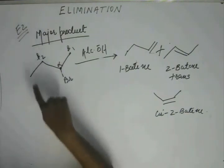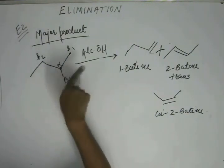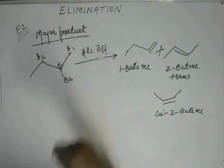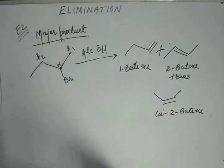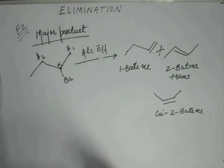So the step in the RDS where hydrogen is abstracted from beta 1 or beta 2 will be almost equally facile. This position alone will not govern which path leads to the major product.